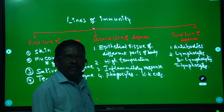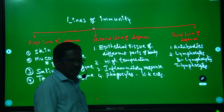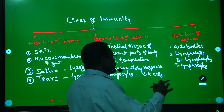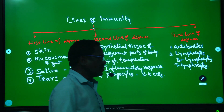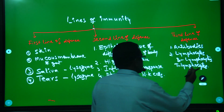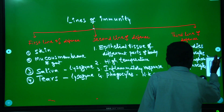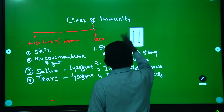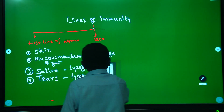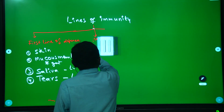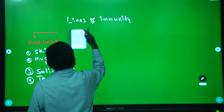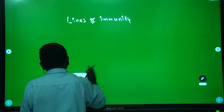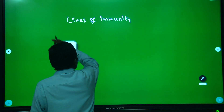So these are the three lines of defense — lines of immunity. First line includes skin, mucous membrane, saliva, and tears. Second line includes epithelial tissue, high temperature, inflammatory response, and phagocytes. Third line includes antibodies and lymphocytes. Next we will see the cells of the immune system.